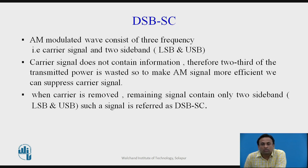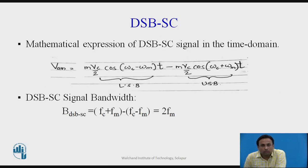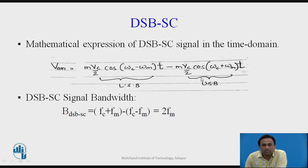The advantage of suppressing the carrier is that we can save the transmitted power, thereby increasing the efficiency of a DSBSC signal. It is one type of AM signal. The mathematical expression for a DSBSC signal in the time domain shows that the carrier component VC sin(ωc·t) has been removed, leaving only the LSB and USB components.